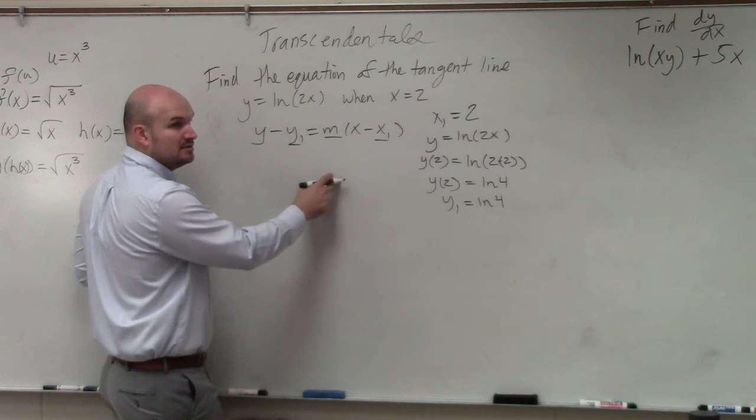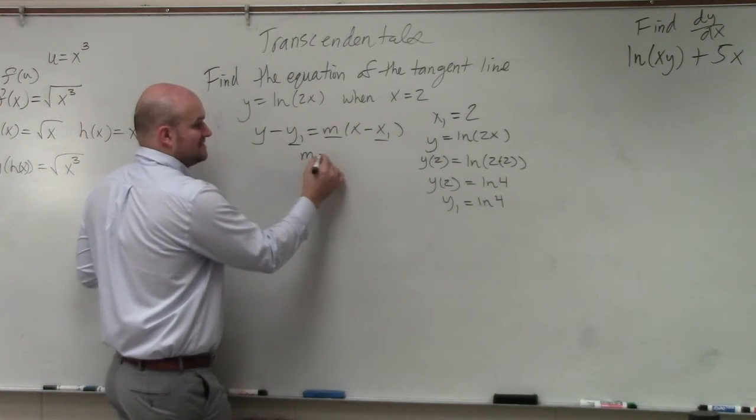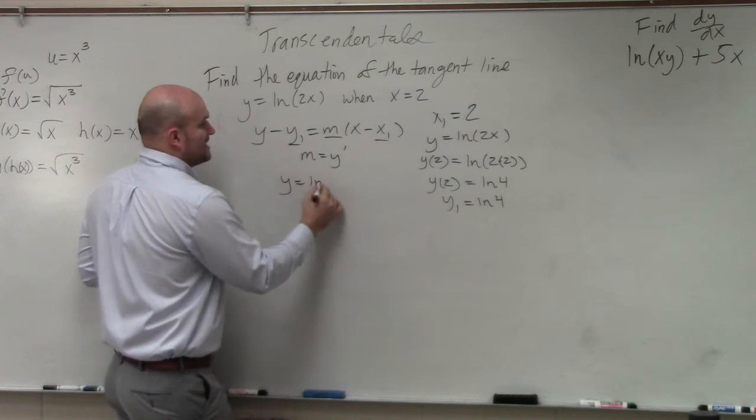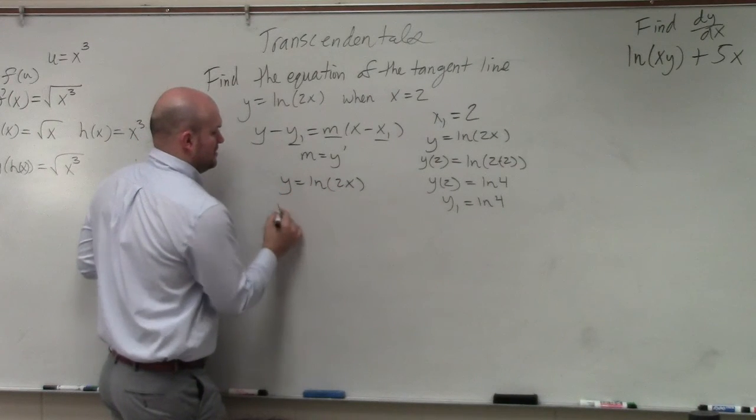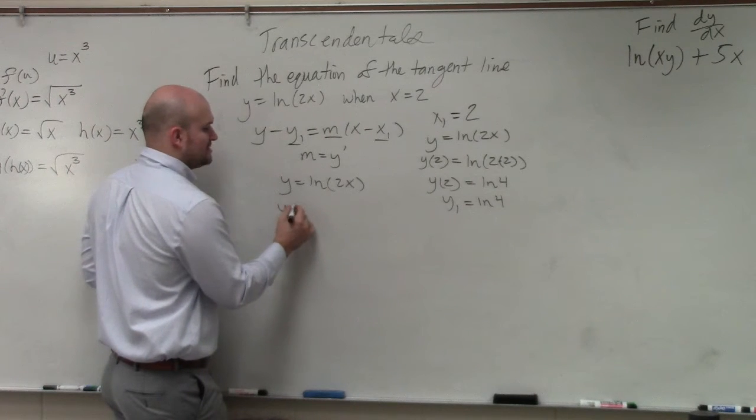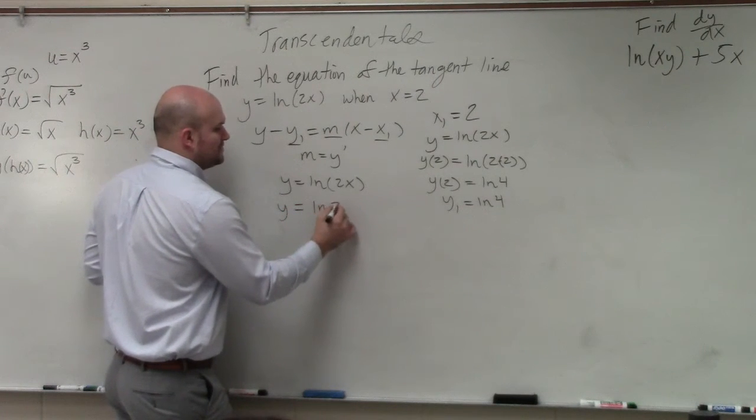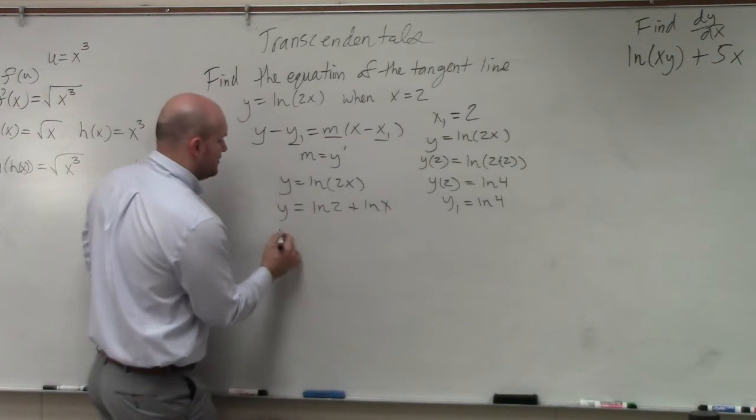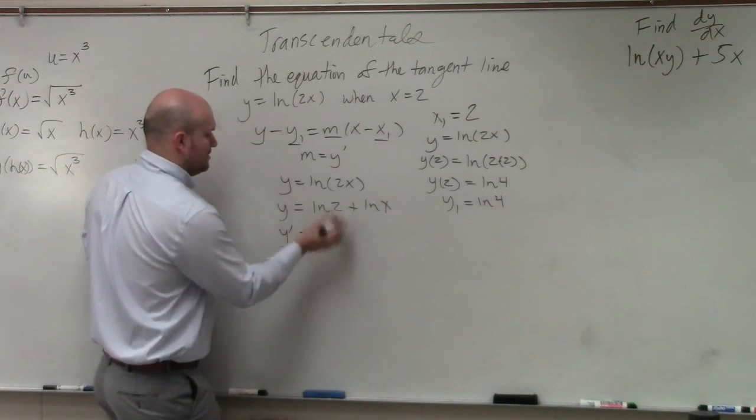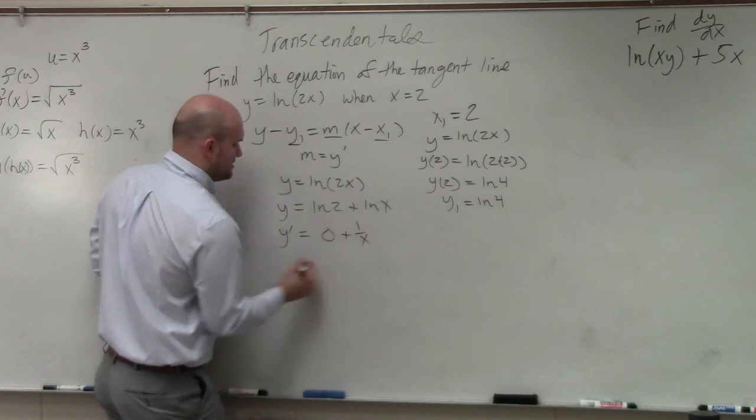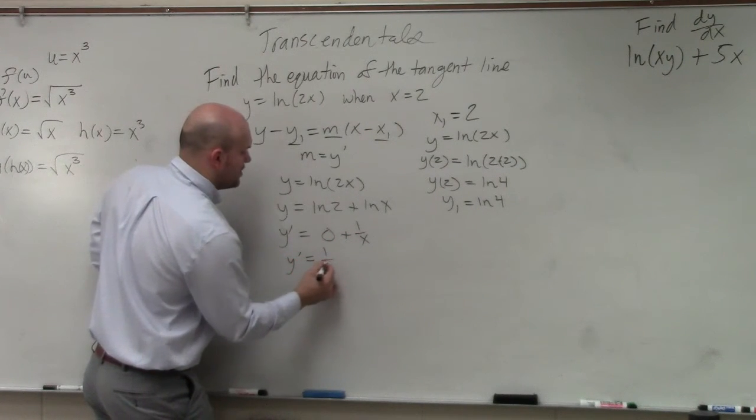Well, remember, m is our derivative, right? We could say m is equal to y prime. So if we have y equals ln of 2x, y prime, first of all, let's use the properties of logarithms. I'll do ln of 2 plus ln of x. Now, to find y prime, that becomes 0, and that's going to be plus 1 over x. So y prime equals 1 over x.